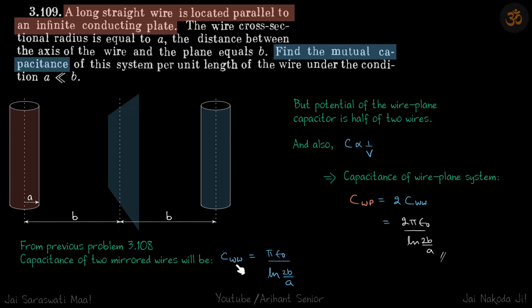But this is the capacitance between two wires. It's going to be different when we're talking about the wire and the plane, because the potential difference between the two wires is actually double the potential difference between the wire and the plane.